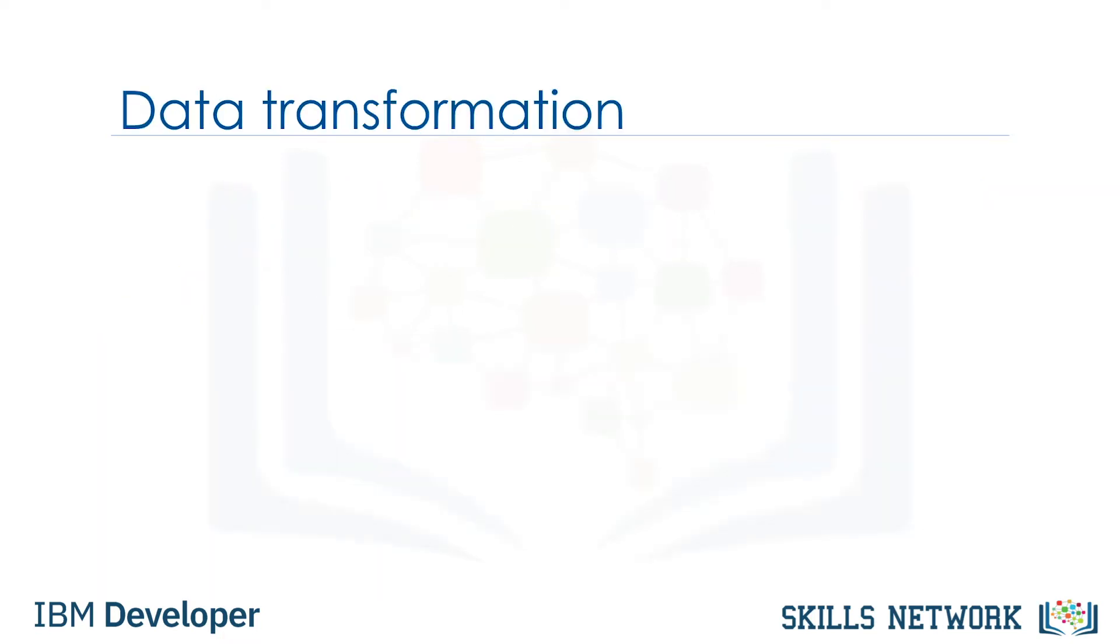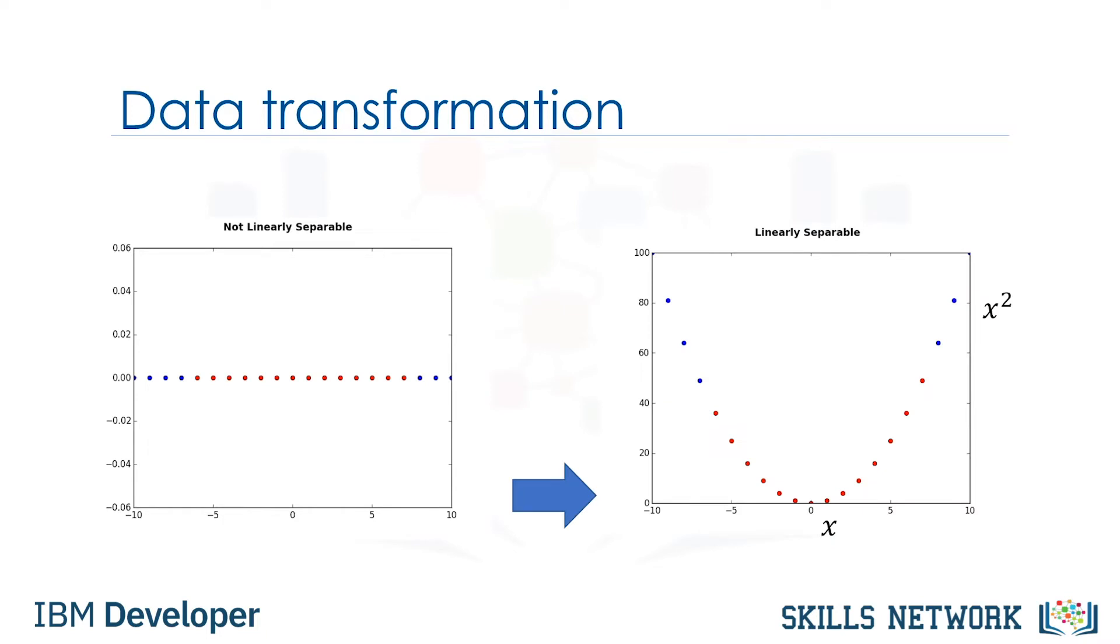Let's first look at transforming data to see how it works. For the sake of simplicity, imagine that our data set is one-dimensional data. This means we have only one feature x. As you can see, it is not linearly separable. So, what can we do here? Well, we can transfer it into a two-dimensional space.